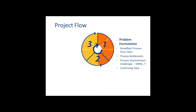Here's the project flow. The first stage is to formulate the problem, done by making a simplified process flow chart — very simplified, but complete. Then identify process bottlenecks by the team. Then we turn those top bottlenecks into challenges starting with 'how might we?' — for example, how might we get the blood test done faster?